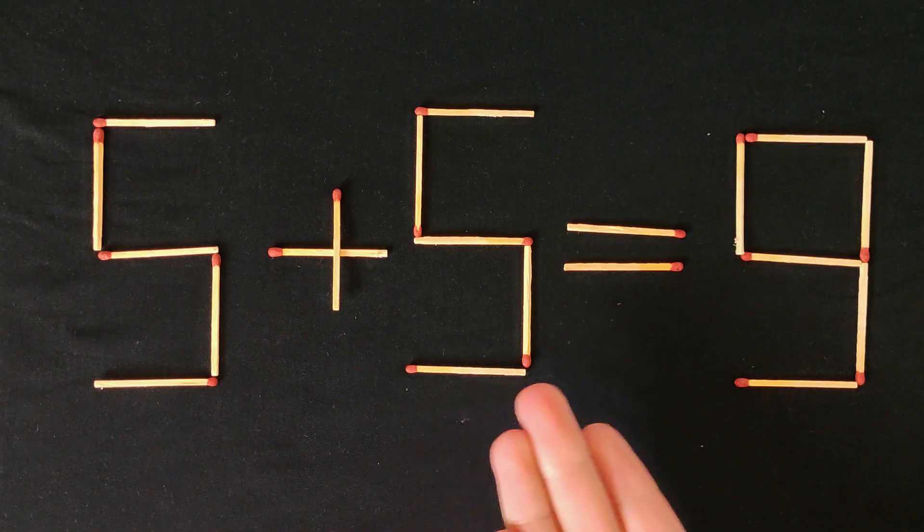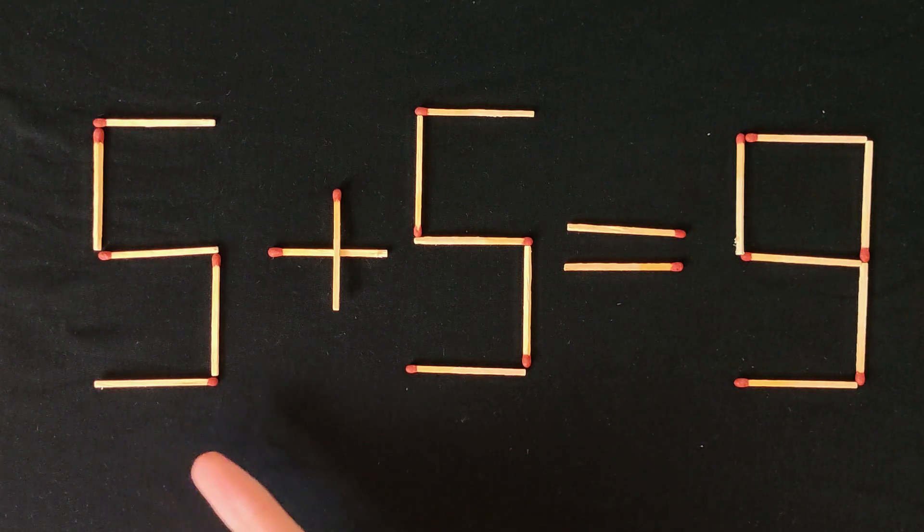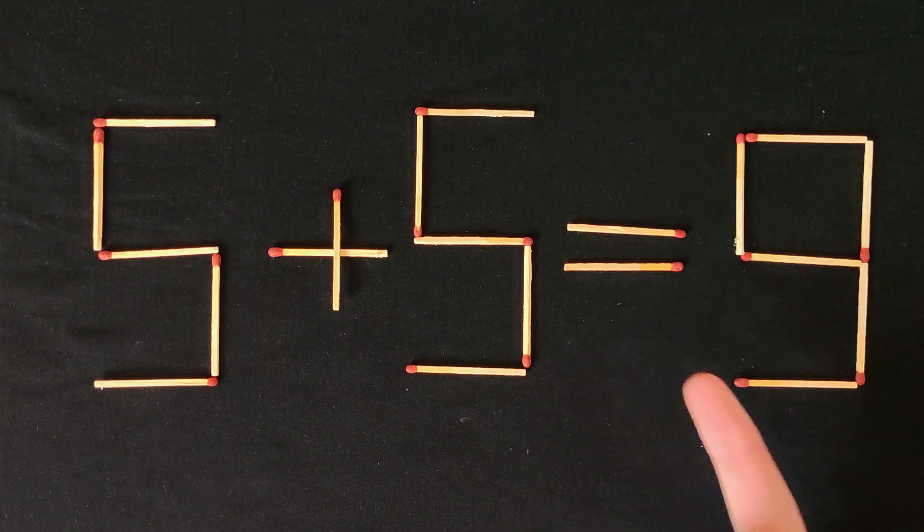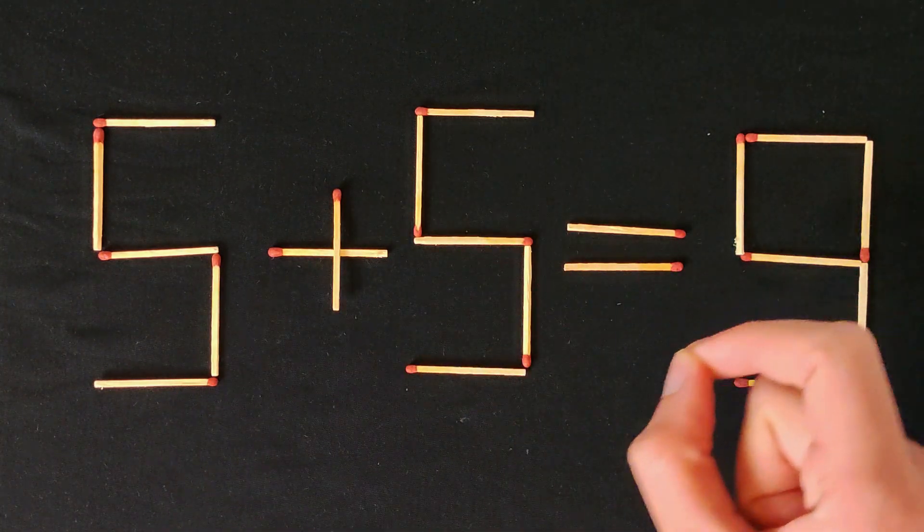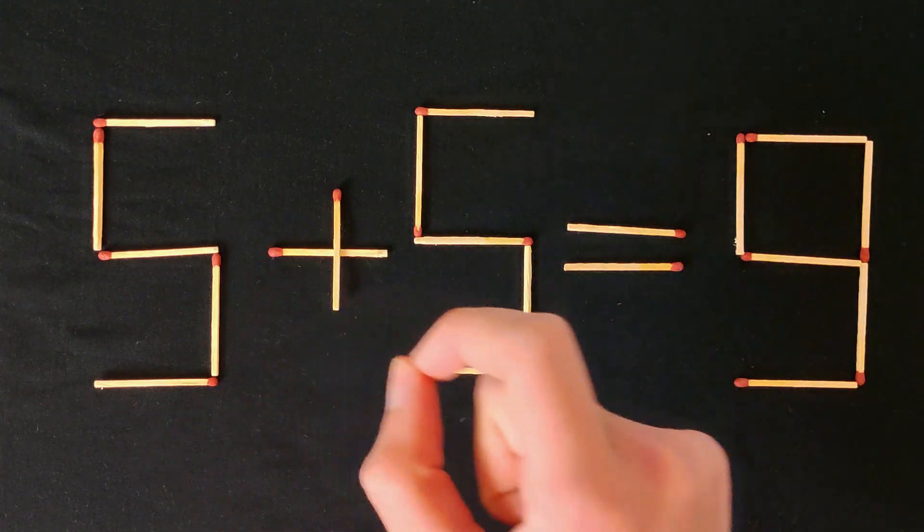Hello everyone, today we have a puzzle like this: 5 plus 5 equals 9. That's wrong. We need to rearrange two matchsticks so that this equation is correct.